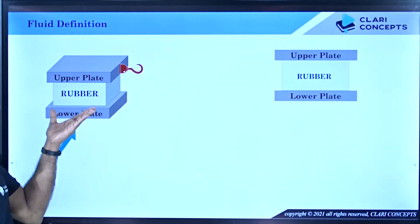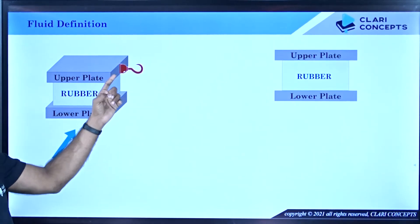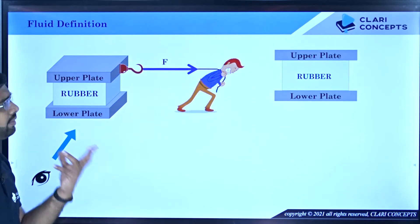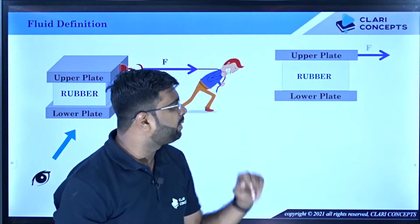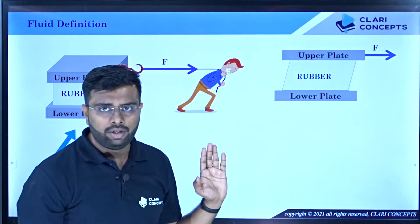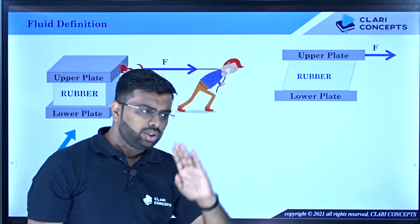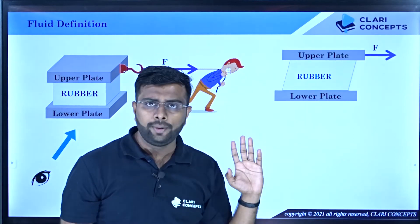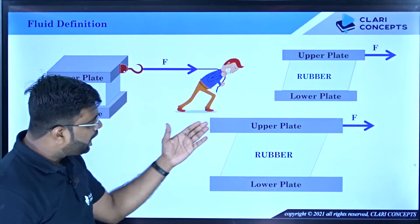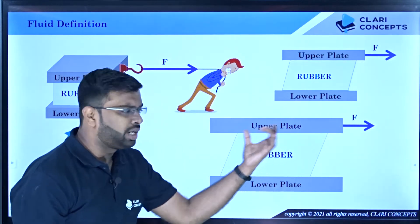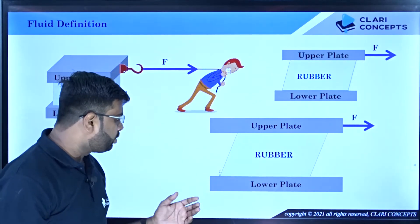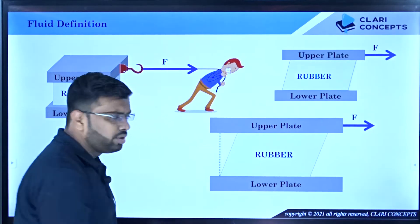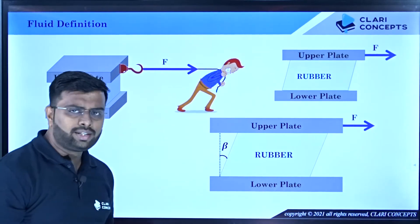The lower plate is fixed. If I put a hook in the upper plate and apply a parallel force on it, the rubber will deform and change shape. Zooming in, we can see that because of the force, the rubber's shape has changed. Tracking the rubber surface, it was originally vertical and now it becomes inclined.